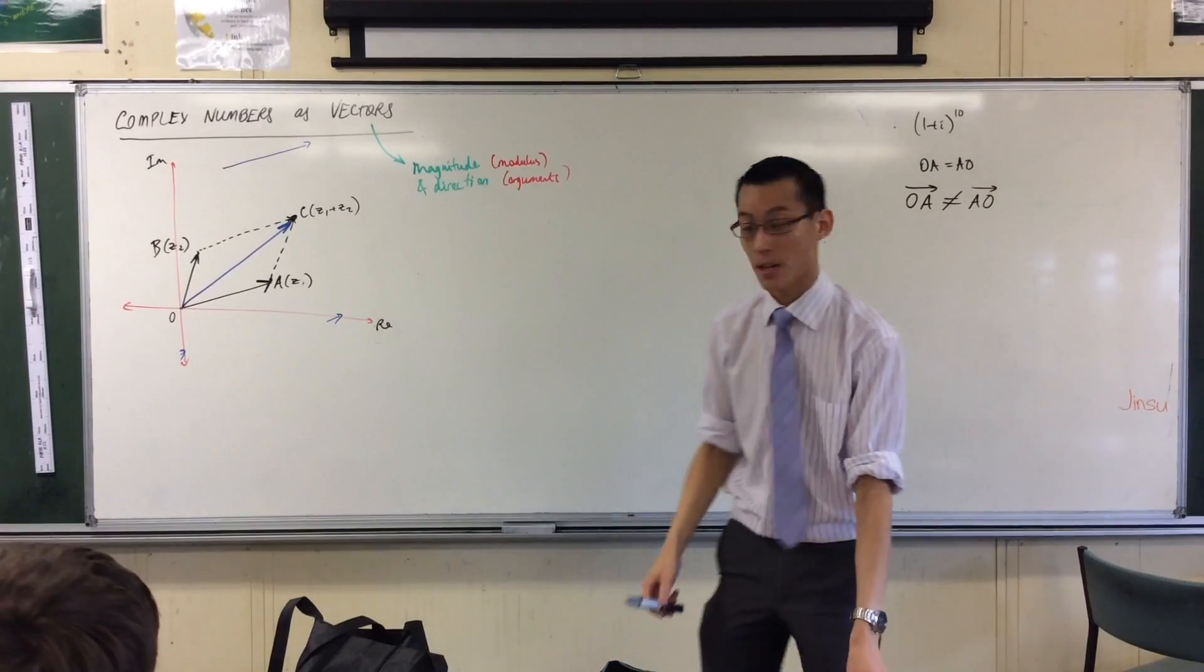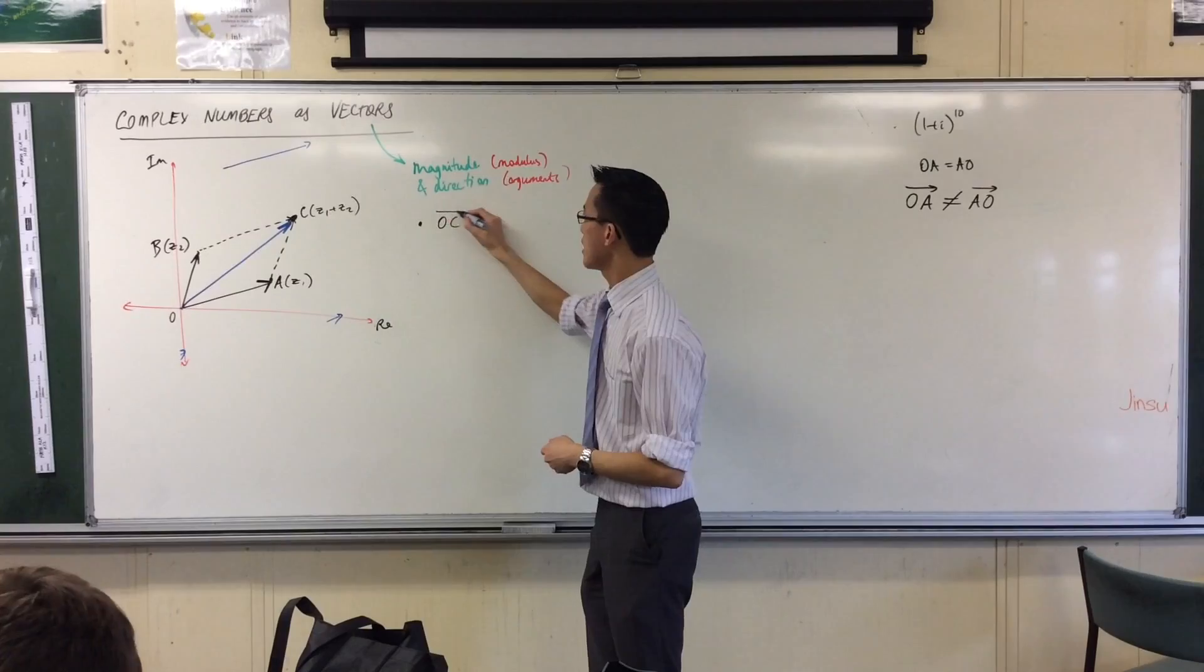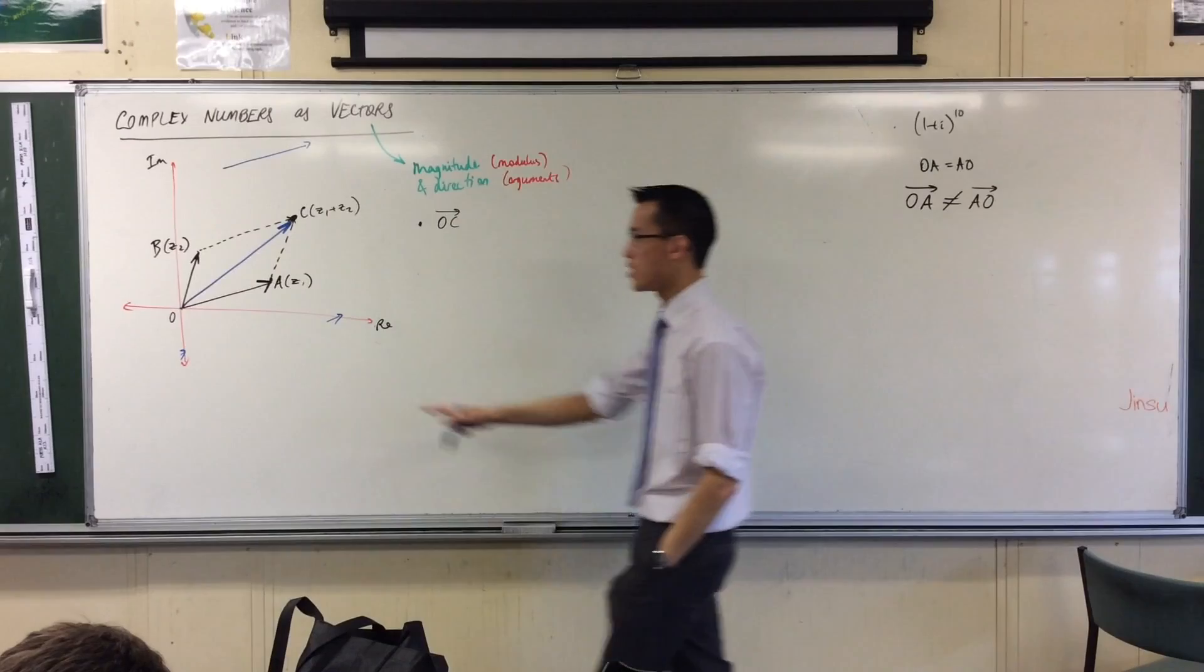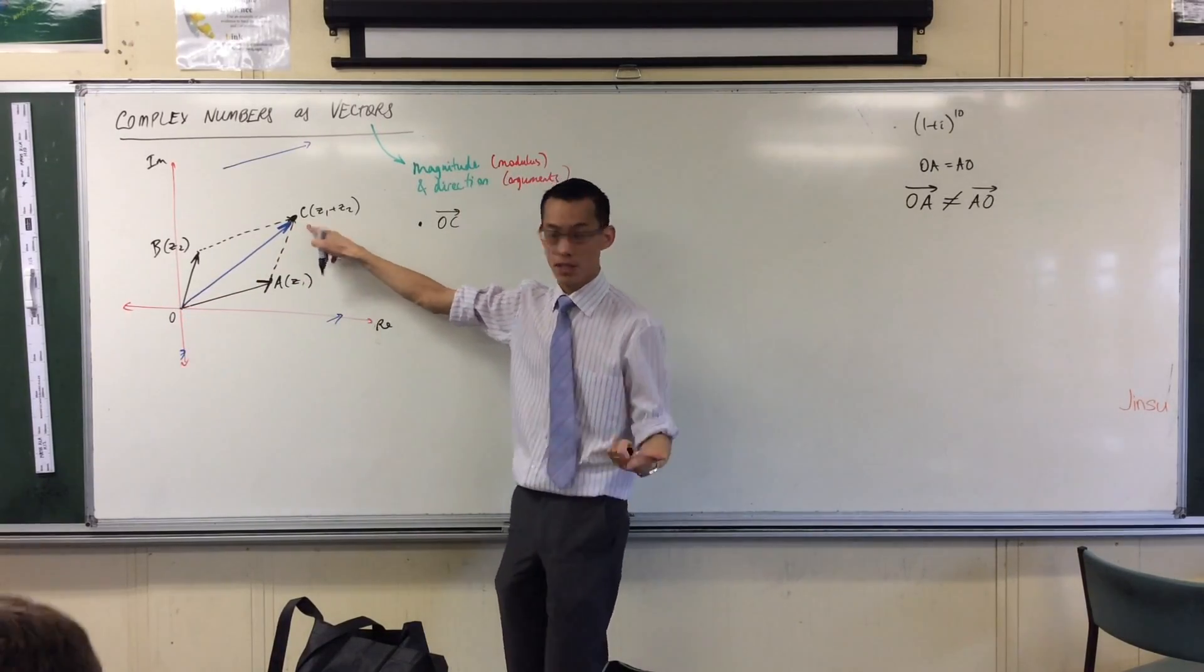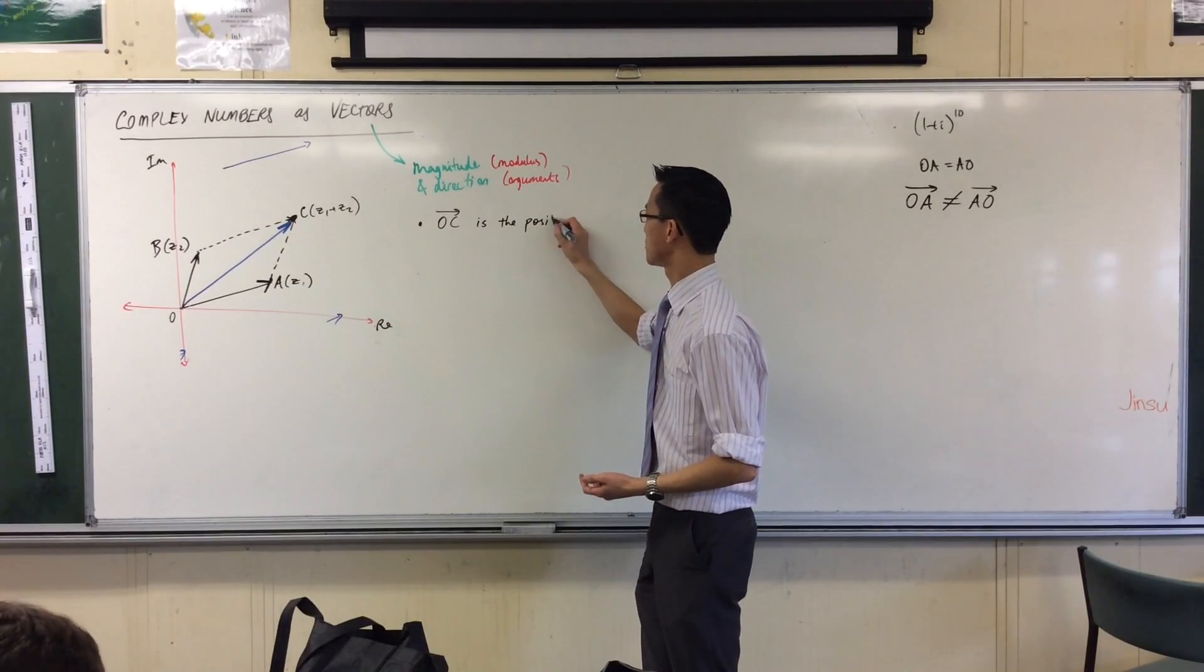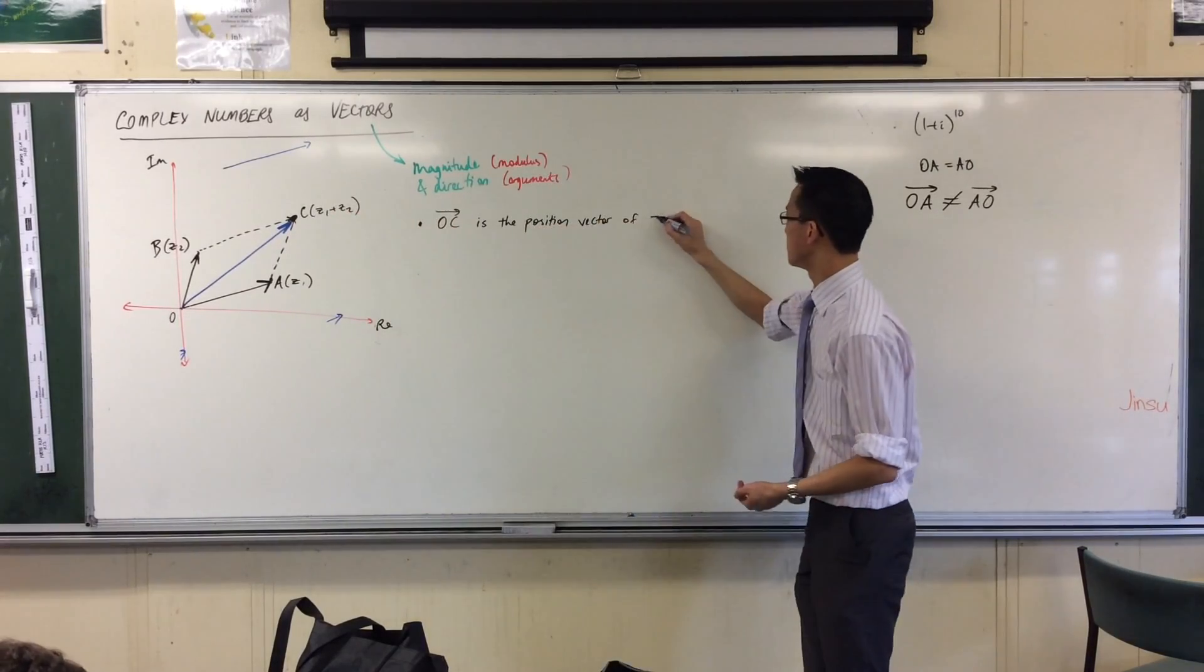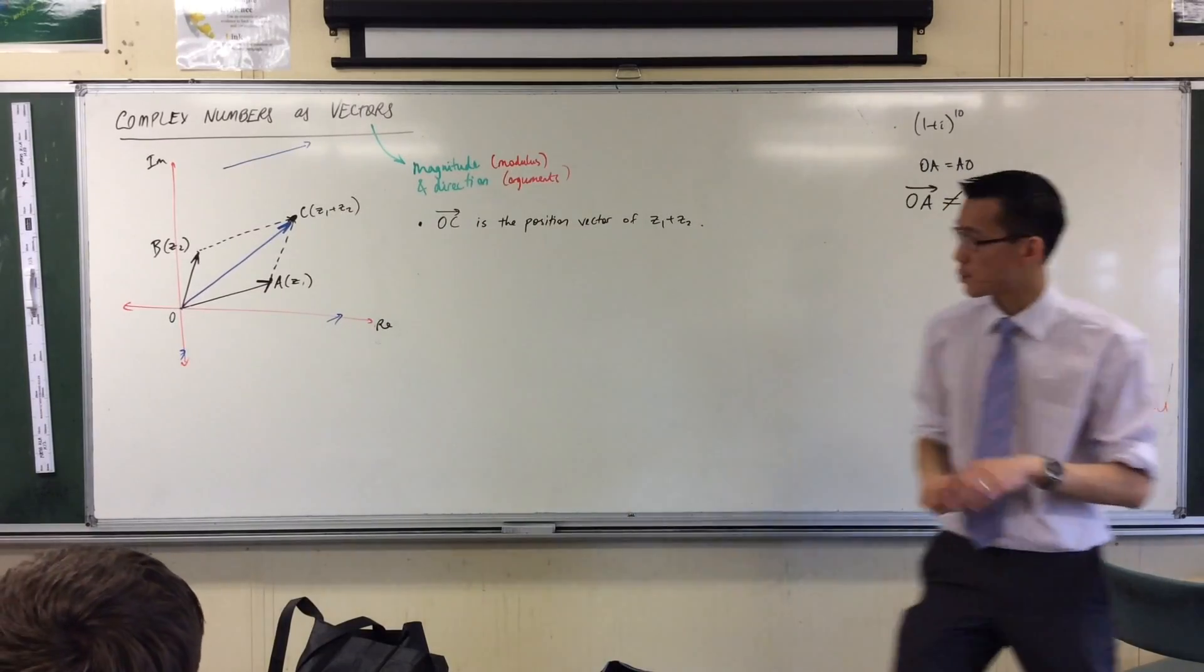So let's formalize some of this, and I'm going to give you some new language for it. I'm going to say OC, and I'm going to put that line over the top to indicate it's a vector, it's got a direction. Because OC is from the origin, it gives me the position over here. So it's called the position vector, the position vector of Z1 plus Z2.